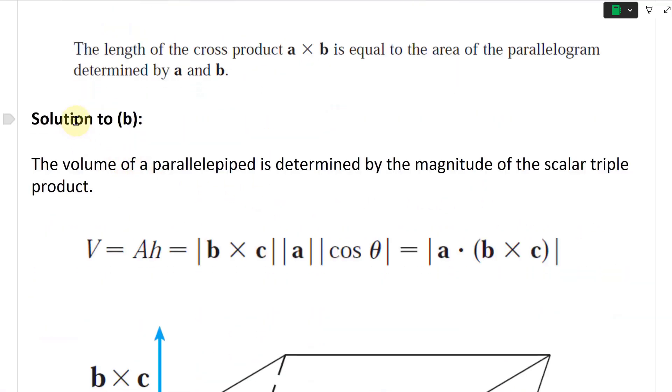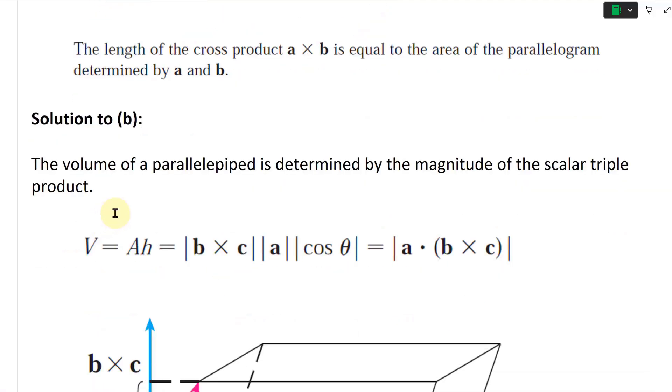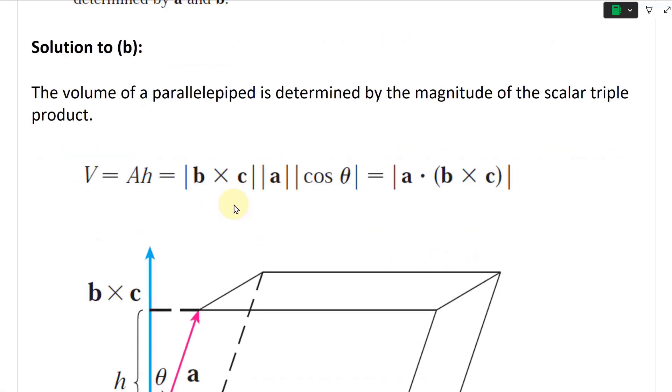And then solution to B. B states the volume of a parallelepiped is determined by the magnitude of the scalar triple product. That's what you would call a scalar triple product, which has the dot product and the cross product. So dot product gives a scalar, cross product gives a vector, but then you have a vector dot product, you're going to get a scalar. And interestingly, yes, they call it vector triple product.